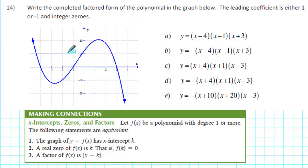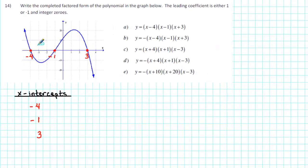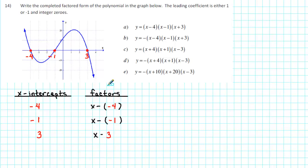So let's first identify the x-intercepts of this polynomial. The x-intercepts are at negative 4, negative 1, and 3. From the x-intercepts, we can determine the factors of the polynomial. To find each factor, we subtract the x-intercept from x. So our first factor is x minus negative 4, which simplifies to x plus 4. The second factor is x minus negative 1, which simplifies to x plus 1. And the third factor is x minus 3.